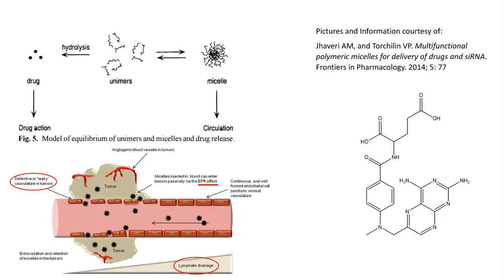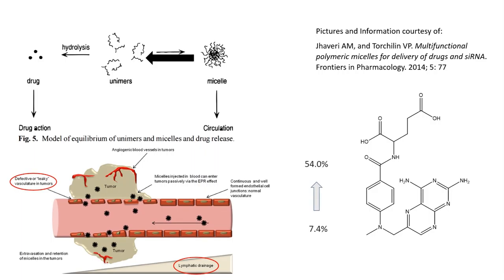The EPR effect predicts that drug molecules will accumulate around cancerous growths, and as such the concentration of micelles increases. The equilibrium shifts to favour their dissociation into unimers, where the ester bonds can be hydrolyzed and methotrexate released to affect the cancerous cells. In the case of the PEO-PHEA methotrexate ester, it was found that as the number of micelles prepared with methotrexate attached to the core increased from 7.4% to 54%, the total amount of methotrexate released within the first three weeks of the trial decreased from 21% to 5%.